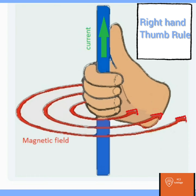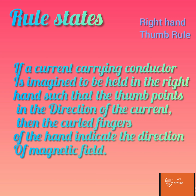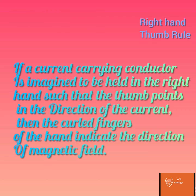Hi all, let us learn right hand thumb rule. The rule states that if a current carrying conductor is imagined to be held in the right hand such that the thumb points in the direction of current, the curled fingers of the hand indicate the direction of the magnetic field.